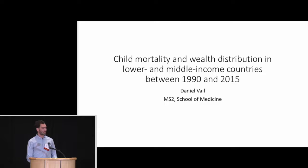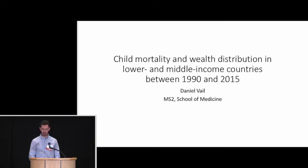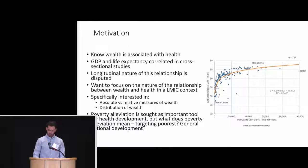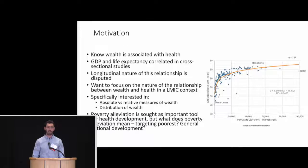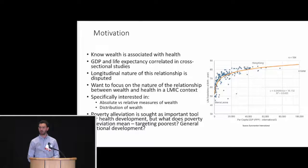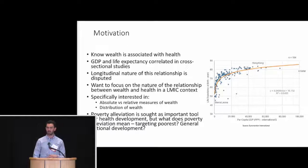Thanks for having me. Today I'll be talking about the relationship between health and wealth in a DHS data set. The idea that health and wealth might be connected is not a new idea — it's been studied extensively at both the national and individual household level. As an example of a national level study, I've plotted the Preston curve, which plots life expectancy for countries at a certain moment in time with their GDP, and it shows a pretty tight association between wealthier countries having higher life expectancy.